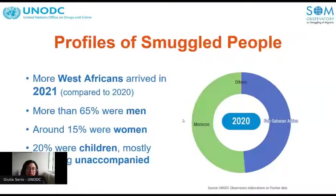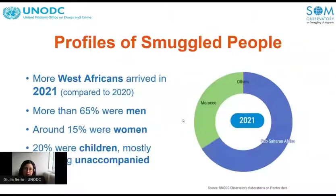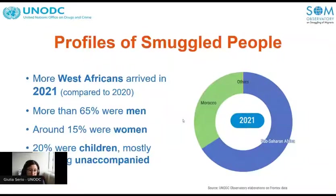Looking at the profiles of people who arrived at the Canary Islands: statistical data is limited, but more West Africans arrived in 2021 compared to 2020. During fieldwork, we met people from many different countries in West Africa, from Mali to Gambia and Senegal. The profile in terms of gender and age was very diverse: the majority were men, around 15% were women, and 20% were children, mostly traveling unaccompanied during the sea crossing.